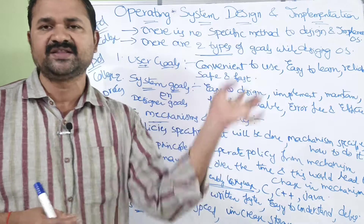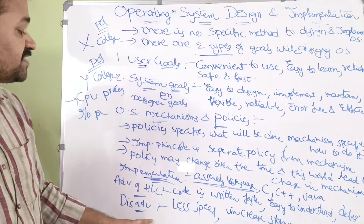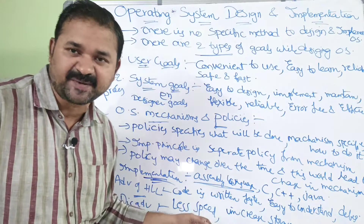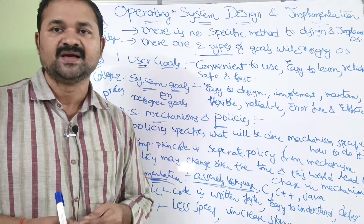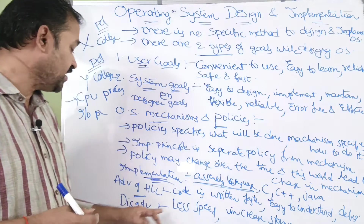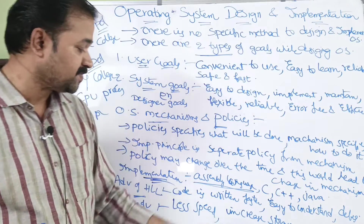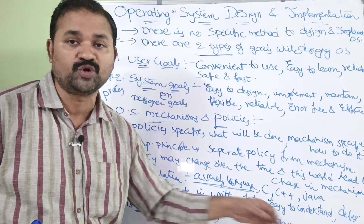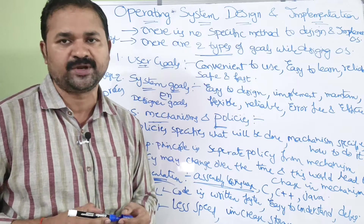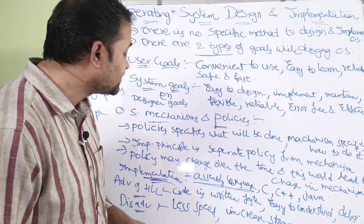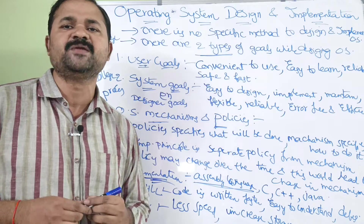The disadvantages of high level languages are: less speed — the speed is less when compared with assembly level languages, since assembly languages are much faster. Another disadvantage is increased storage — in order to store a high level language program, we require more storage than for an assembly level language program. This is about operating system design and implementation.